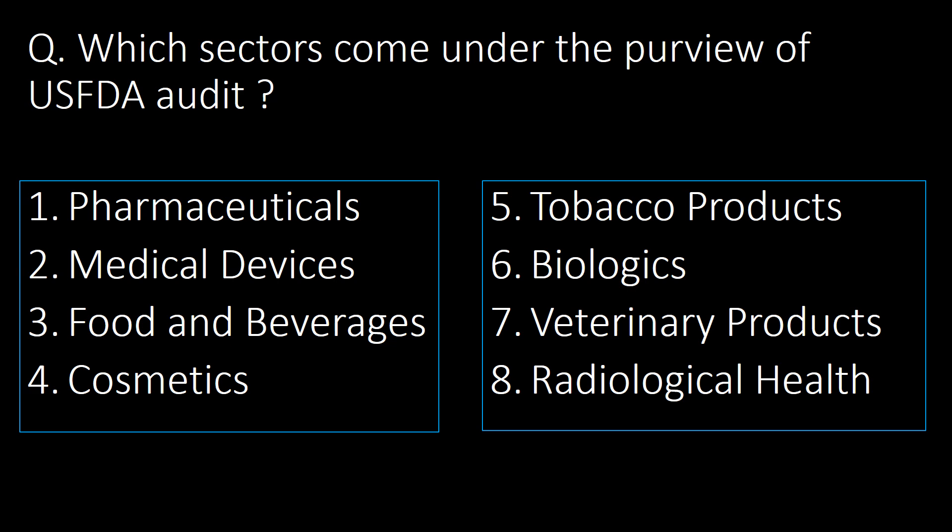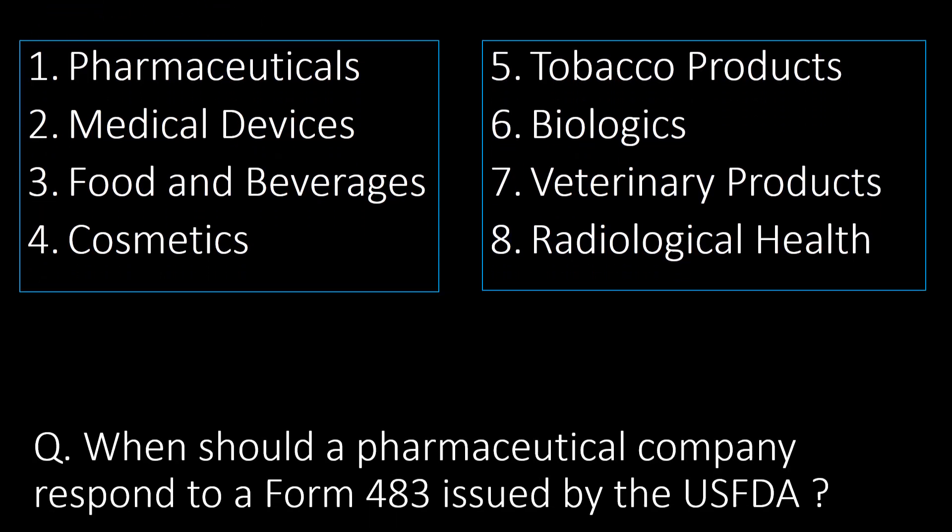Which sectors come under the purview of USFDA audit? There are 8 important sectors: pharmaceuticals, medical devices, food and beverages, cosmetics, tobacco products, biologics, veterinary products, and radiological health.